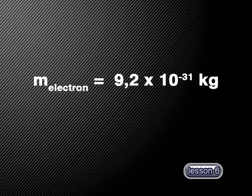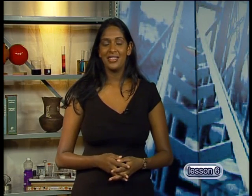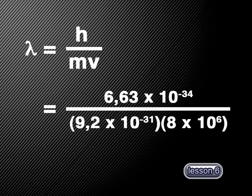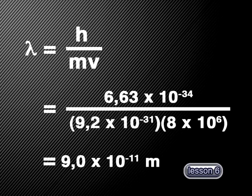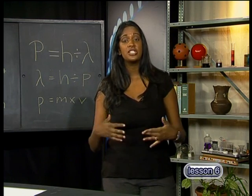But if we have an electron of mass 9.2 × 10⁻³¹ kilograms moving at 8 × 10⁶ meters per second, could we detect its wave nature? Once again we use de Broglie's equation, this time substituting in the values for the electron. So now the wavelength would be equal to 6.63 × 10⁻³⁴ divided by 9.2 × 10⁻³¹ multiplied by 8 × 10⁶. This gives us a wavelength of 9.0 × 10⁻¹¹ meters. This wavelength is much larger than the wavelength of the cyclist. In fact, it is similar to the wavelength of x-rays and so is large enough for us to detect its wave nature.